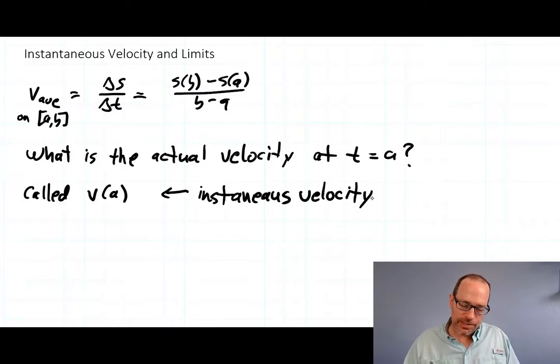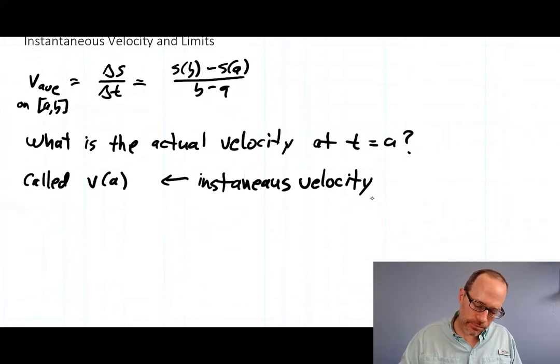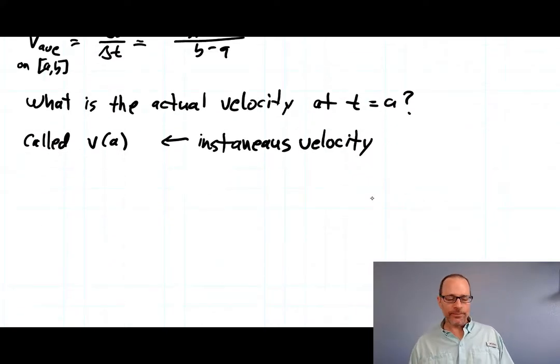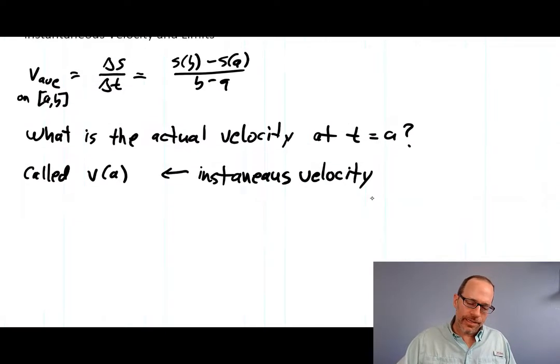But you should really just think of it as the actual velocity. How fast are you going right at time a? All right. Well you might think we can just use this average velocity and put b equals a, like have no time interval to get the instantaneous one. But that wouldn't work because if you put b equals a you'd be dividing by zero and that would be nuts. So we need to come up with another approach.